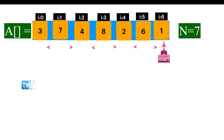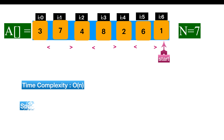The time complexity here is linear because we are traversing from 0 to n minus 1. The space complexity is constant because we are not using any additional space — we are just making use of an in-place algorithm to swap the elements. Let's move on to the solution.